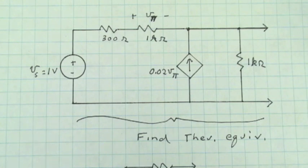As a specific example, let's consider this circuit, which represents a model for a particular type of transistor amplifier called the emitter follower or common collector.